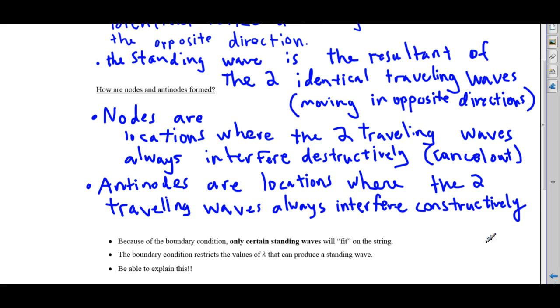They don't cancel, they add together. So now we understand how nodes and antinodes form. And it has to do with interference between the two traveling waves.